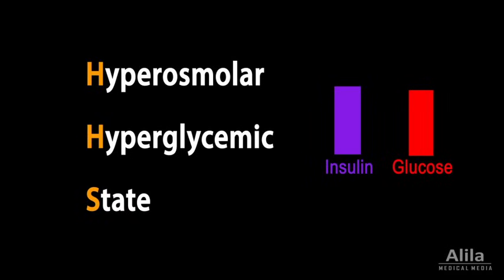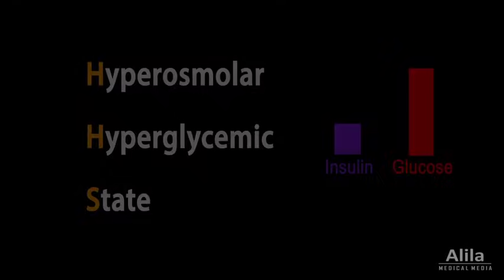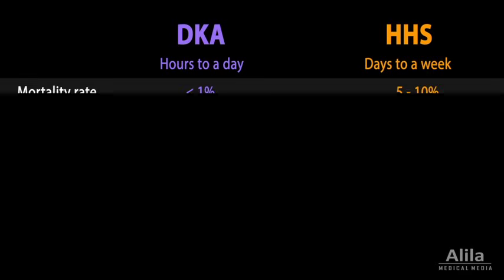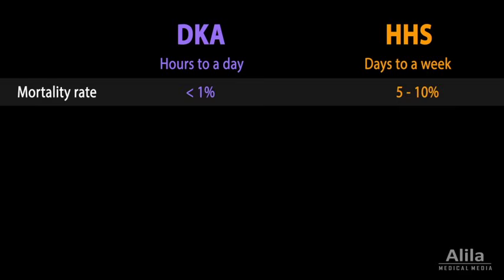Hyperosmolar hyperglycemic state, or HHS, is another acute and life-threatening complication of diabetes mellitus. It develops slower than DKA, typically in the course of several days, but has a much higher mortality rate.